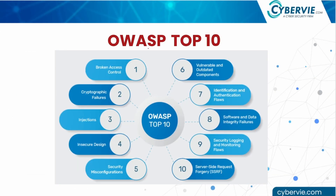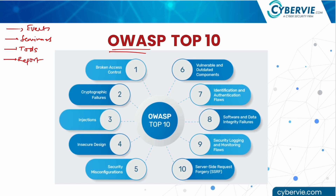OWASP is a non-profit organization that conducts various types of cybersecurity events, seminars, provides cybersecurity tools, and also publishes a report once every four years. There are hundreds of vulnerabilities, and what OWASP does is identify the trends of the most popular and critical vulnerabilities in web applications. We have the top 10 categories of vulnerabilities according to OWASP, listed according to their trends, criticality, and severity.